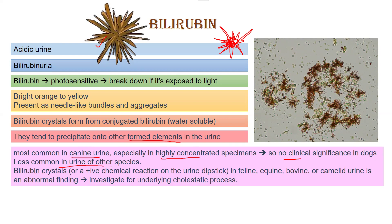Bilirubin crystals are less commonly present in the urine of other species. So if in these other species you are having bilirubin crystals under the microscope, or a positive chemical reaction on the urine dipstick for bilirubin, then it is an abnormal finding and you should investigate for an underlying hepatic process or run other liver function tests. In feline, equine, bovine, and camelid urine, bilirubin crystals are an abnormal finding, whereas in canine urine they are of no clinical significance.